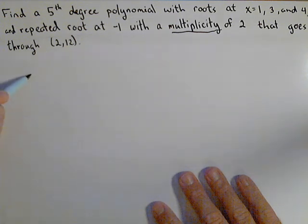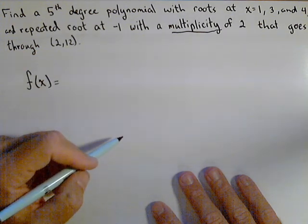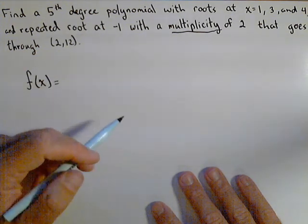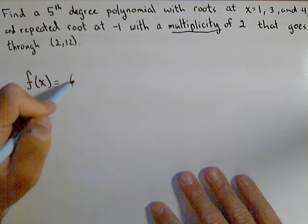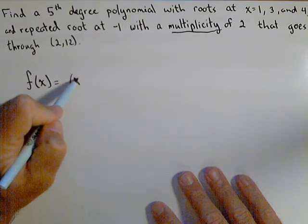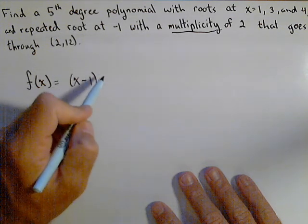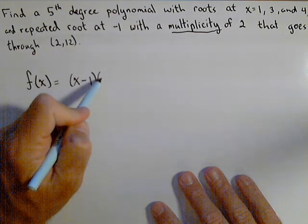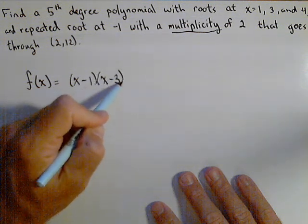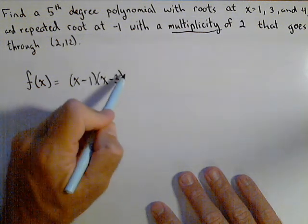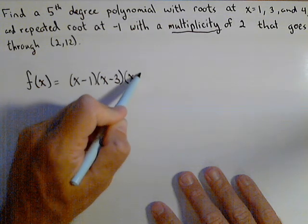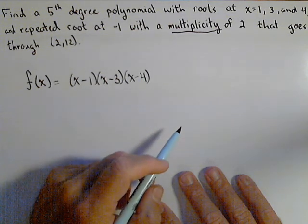Now, in building a polynomial, if we know its roots, we know its factors. So if one is a root, then x minus one has to be a factor. And we can go along this route. If three is a root, then x minus three has to be a factor. If four is a root, then x minus four has to be a factor, pretty slick, huh?